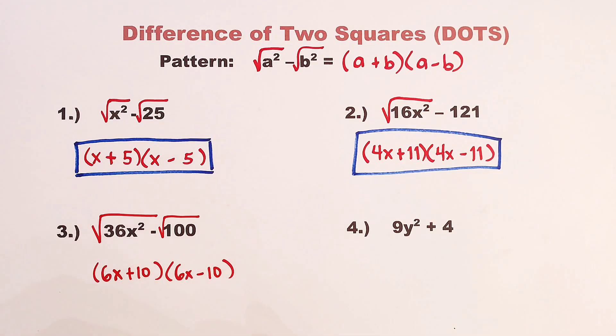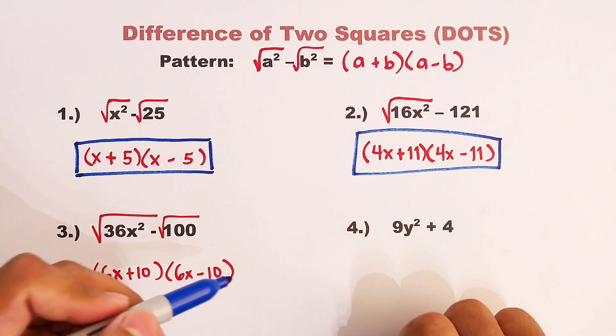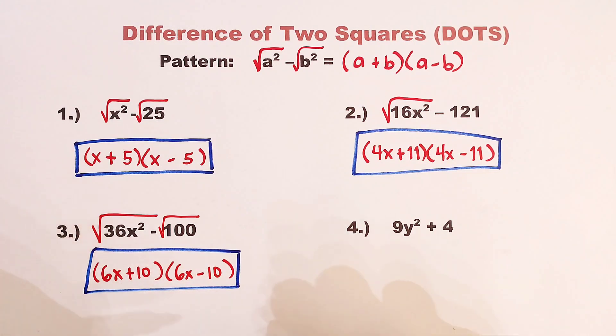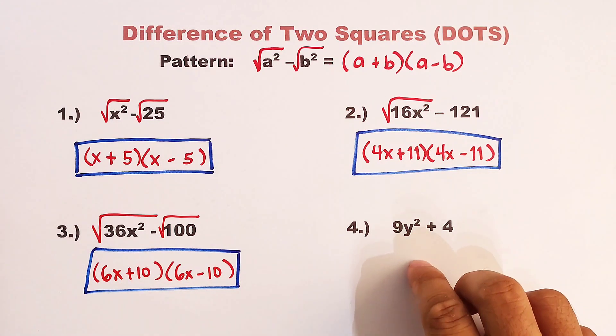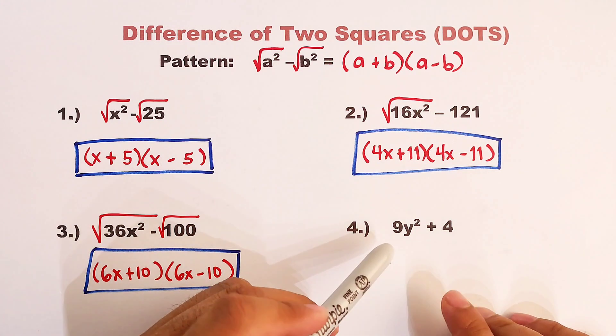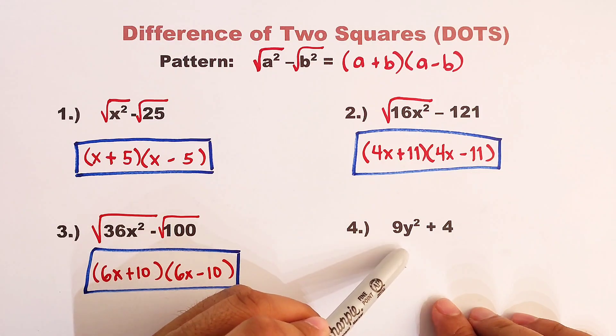And as easy as that, we have the factors as 6x plus 10 and 6x minus 10. Now you can pause the video for a while and you can try number 4.